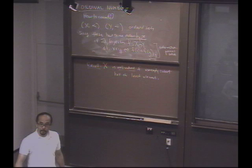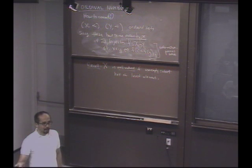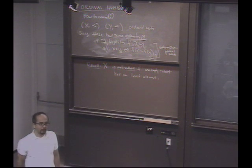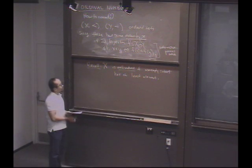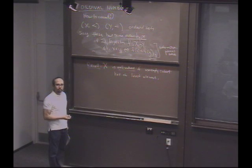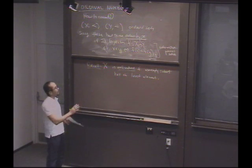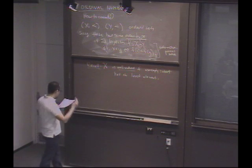Are the natural numbers well-ordered? Yes. Are the integers well-ordered? No — give me an example of a subset that doesn't have a least element: the even integers, for instance. And why did we learn about well-ordering way back when? Because it enabled us to do induction. So we're going to need a good concept of well-ordered sets in order to do transfinite induction.